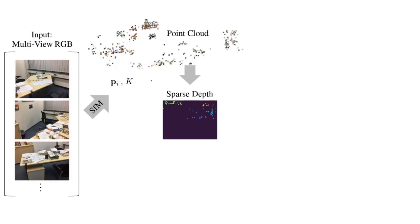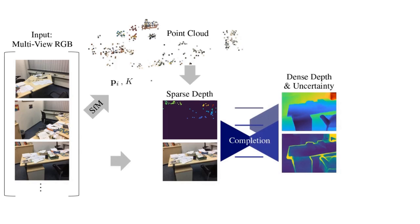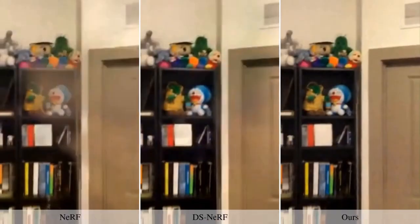However, using sparse depth alone does not sufficiently constrain the radiance field. Hence, we learn dense depth priors in the form of a network that completes sparse depth and estimates uncertainty. We use this dense depth and uncertainty to supervise NeRF and guide the sampling along rays.